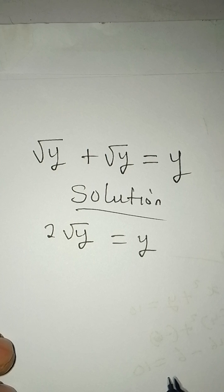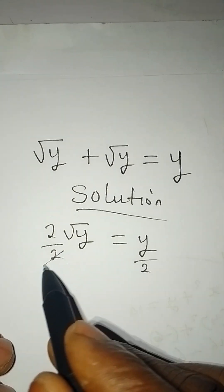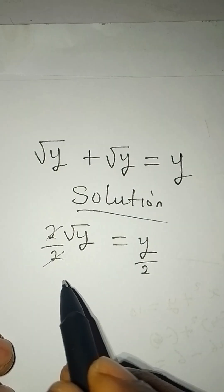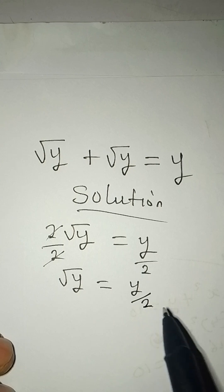Now we divide both sides by 2, so we have √y = y/2.